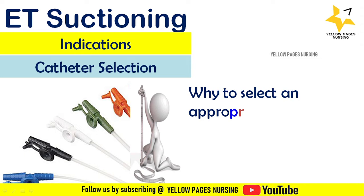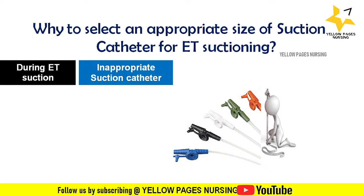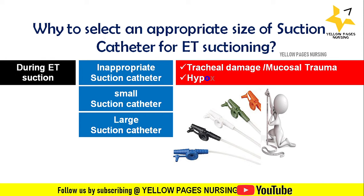Next is catheter selection. Why do we need to select an appropriate size suction catheter for ET suctioning? During endotracheal suctioning, using an inappropriate suction catheter — either too small or too large — may cause tracheal damage, mucosal trauma, and hypoxia.